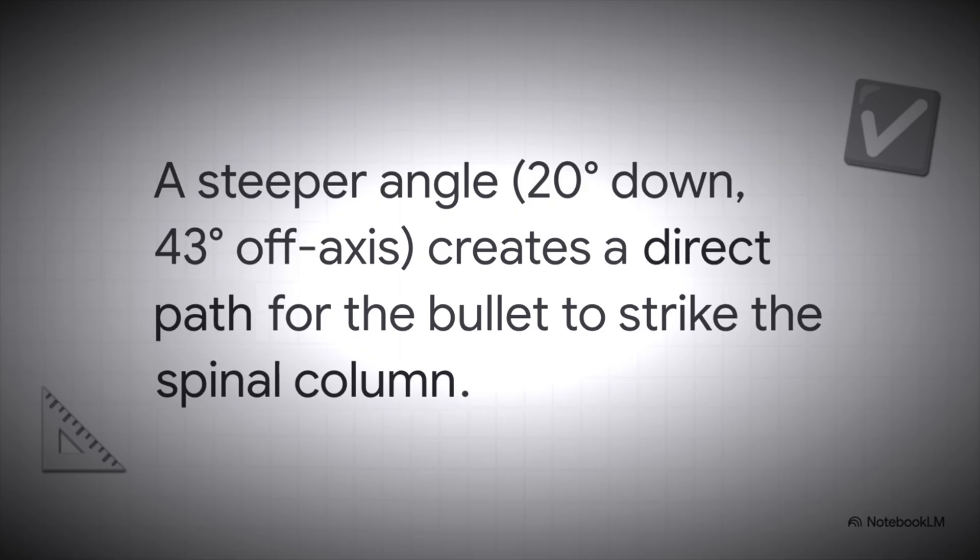And boom. There it is. That's the absolute core of this entire analysis. This new trajectory is the only one that actually aligns with the physical evidence. It provides a direct path to the spine, which would stop the bullet and create that exact cavitation event we see on the video.